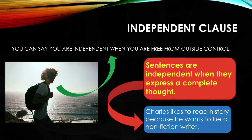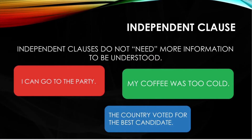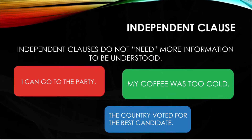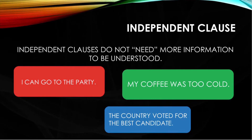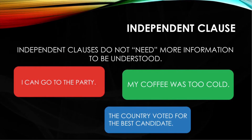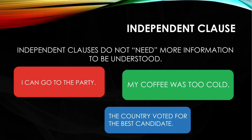For example: Charles likes to read history because he wants to be a non-fiction writer. Independent clauses do not need more information to be understood. For example, the country voted for the best candidate, or my coffee was too cold, or I can go to the party.